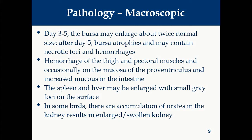IBD virus is responsible for increased coagulation time, leading to widespread hemorrhage over various organs including thigh and pectoral muscles. Occasionally, the mucosa of the proventriculus will also show hemorrhages, and the intestinal mucosa will show mucus coating. The spleen and liver may also get enlarged with small gray foci on the surface. In some birds there will be accumulation of urates in the kidney resulting in enlarged or swollen kidneys, attributed to the enlarged bursa occluding the ureters, leading to accumulation of urate crystals in the kidney.